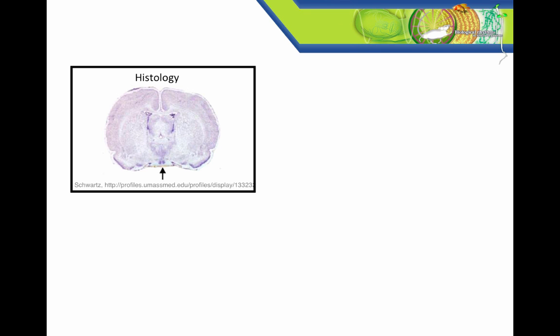Throughout the course you may see images from circadian research that has used these techniques. For example, here researchers have used Nissel staining to image the SCN in a coronal slice of a rat brain.